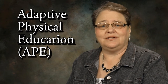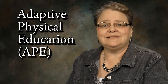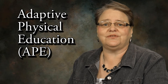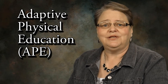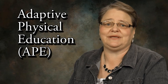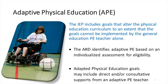Adaptive Physical Education, or APE, is identified when the IEP includes goals that alter the physical education curriculum to an extent that the goals cannot be implemented by the General Education PE teacher alone. The ARD identifies adaptive PE based on an individualized assessment for eligibility. Adaptive Physical Education goals may include direct or consultive supports from an adaptive PE teacher.